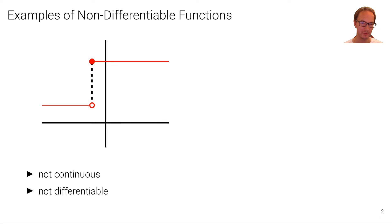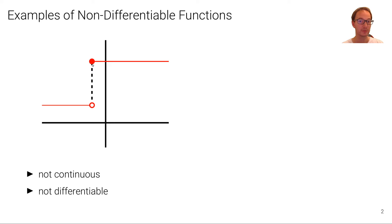Here are some examples of non-differentiable functions. The first example is a non-differentiable function that is also not continuous — a function that has one value and then suddenly jumps to another value. At the jump, we define this function to have the higher value. This is clearly not continuous because of the jump. It's also not differentiable because if we take the limit from the left and the limit from the right, we get different limits — an infinitely steep slope from the left and zero from the right.